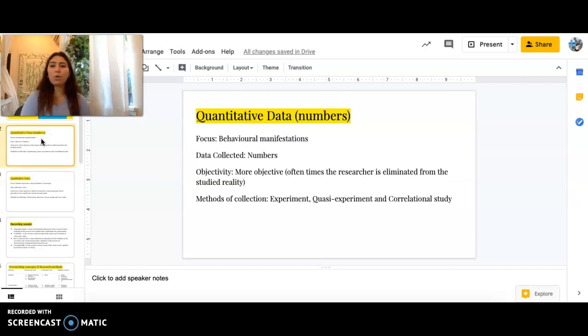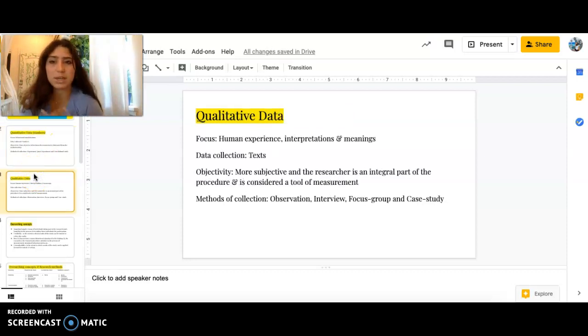Okay, so let's talk about quantitative data first. So quantity, we're thinking numbers. Quantitative data is looking at numbers, and the focus would be in behavioral manifestations. The objectivity is, it's more objective, and oftentimes the researcher is eliminated from the studied reality. And the methods of collection are experiment, quasi-experiment, and correlational studies. We'll get more about qualitative and quantitative data, but let's go to qualitative data.